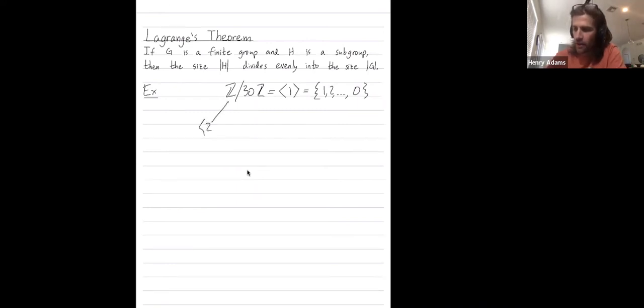Inside of this, I have subgroups generated by 2. I have subgroups generated by 3. I have a subgroup generated by 5. Instead of those, I have a subgroup generated by 6. I have a subgroup generated by 15. And I have a subgroup generated by 10. And then finally, at the bottom, I have a subgroup generated by 0.